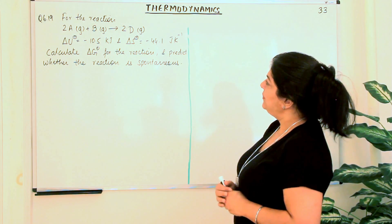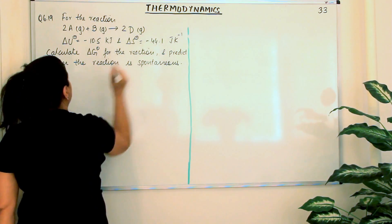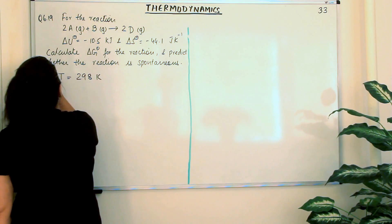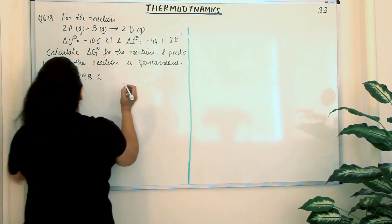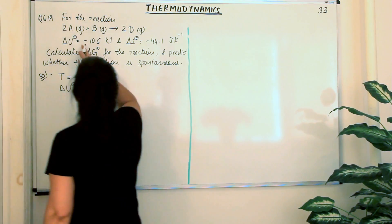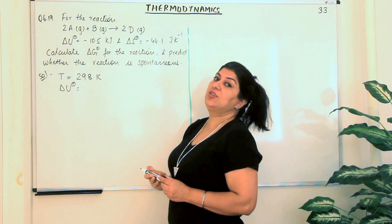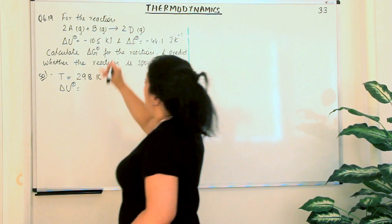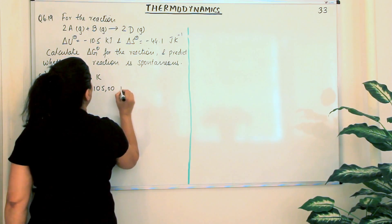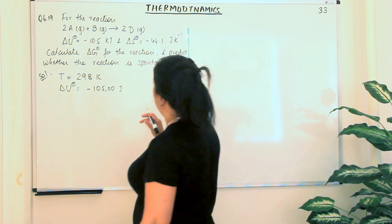We have an equation and we have been given the value of delta U. It is under standard state, therefore the temperature for this reaction is 298 Kelvin. Delta U⁰ is equal to minus 10.5 kilojoules. We would like all readings to be in joules, so I will convert this into minus 10,500 joules by multiplying by 1000.